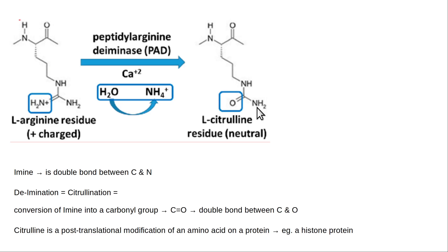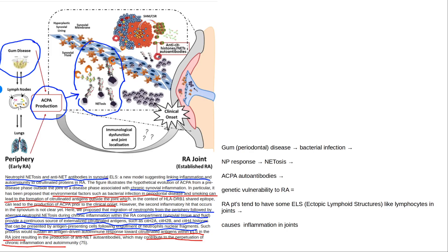Citrulline is an amino acid that has been modified — it's a post-translational modification, meaning it happens after the protein was synthesized. It's not one of the standard 20 amino acids. The modification results in a carbonyl group — a carbon double-bonded to an oxygen. This leads to anti-citrullinated protein antibodies and rheumatoid arthritis.